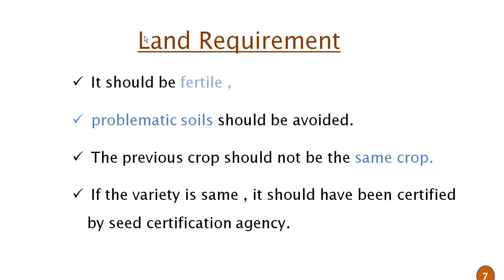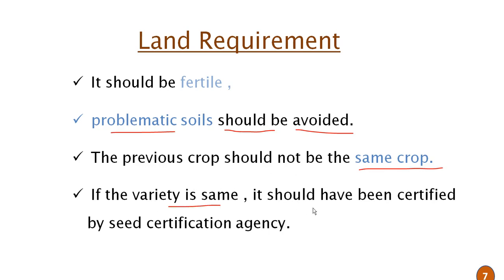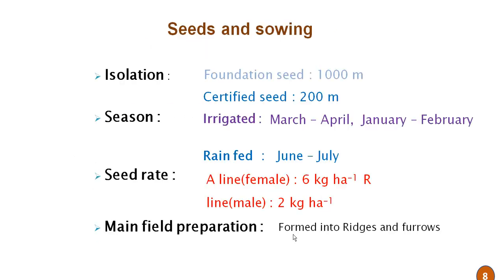Land requirements: the land should be fertile and problematic soils should be avoided in hybrid seed production. The previous crop should not be the same crop due to the problem of volunteer crops. If the variety is the same, it should have been certified by a seed certification agency.